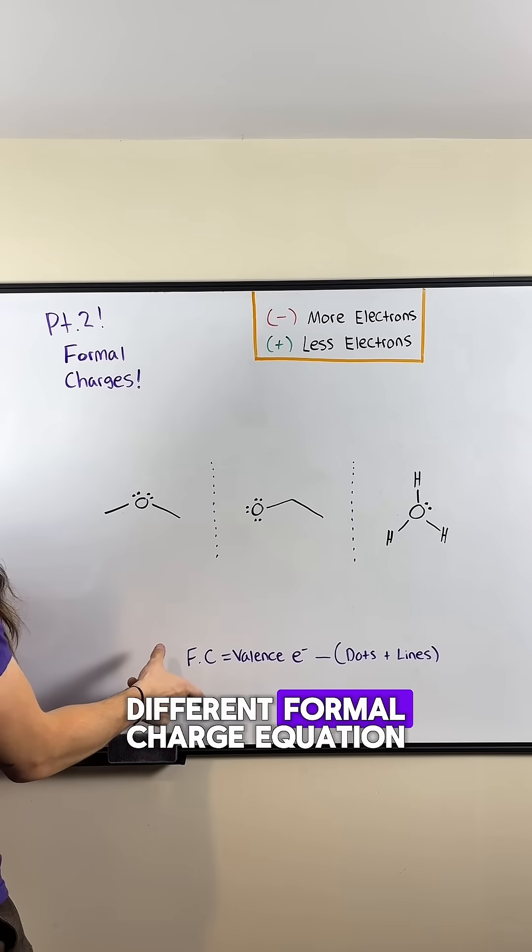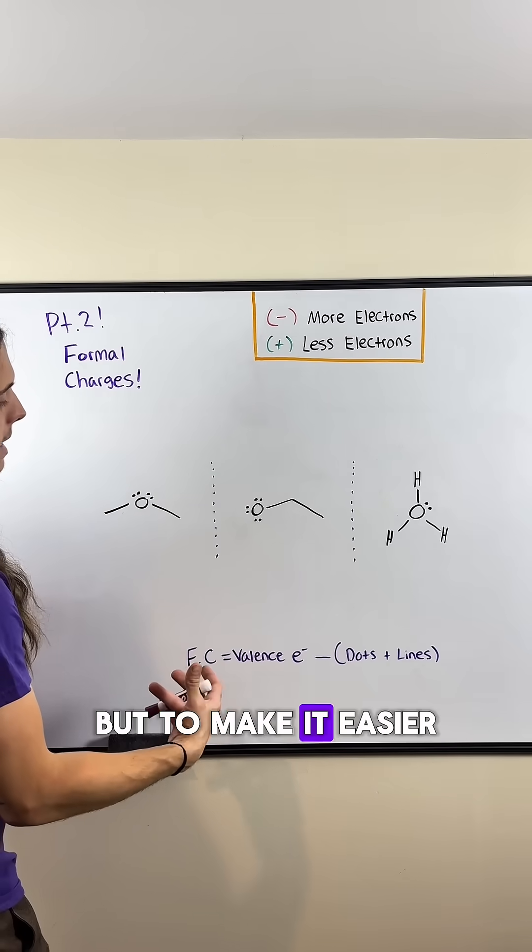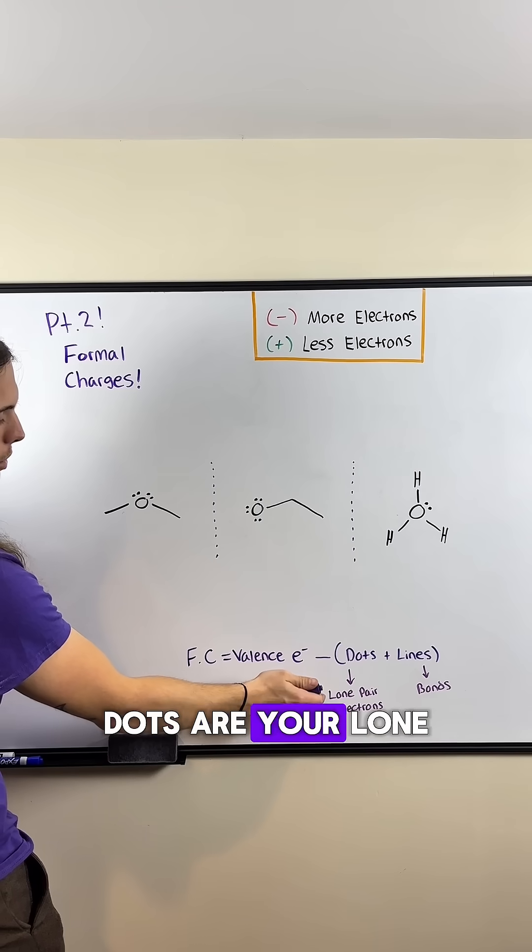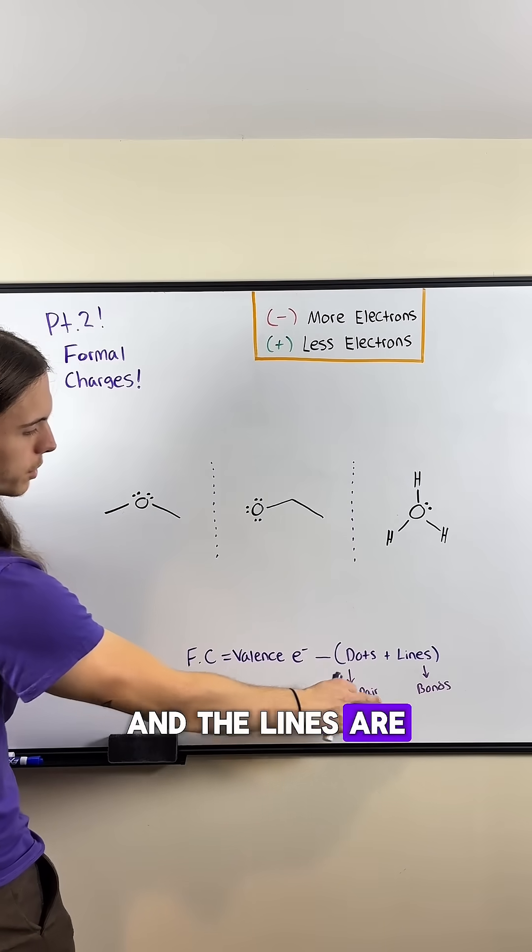You've probably seen a different formal charge equation in class, but to make it easier, we'll have valence electrons minus dots plus lines. Dots are your lone pair electrons, and the lines are your bonds.